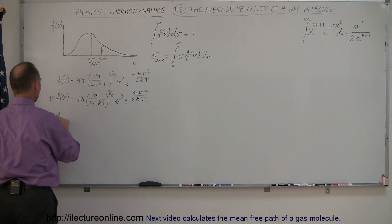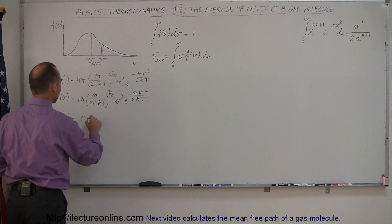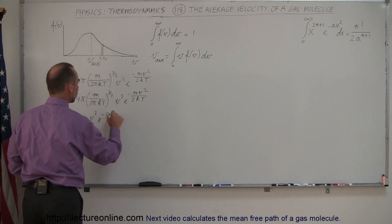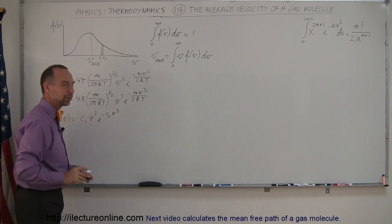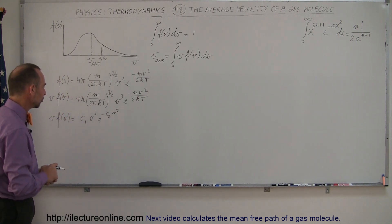So V times the function of V is equal to constant 1, V cubed, e to the minus constant 2, V squared. And now we don't have that mean-looking equation anymore.